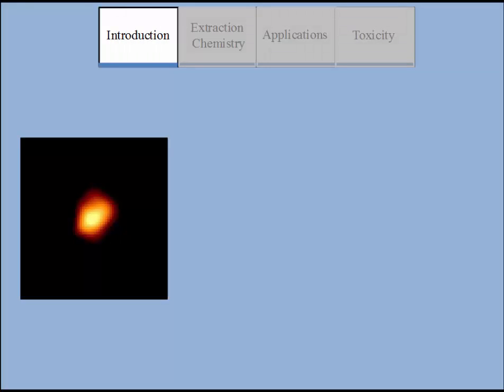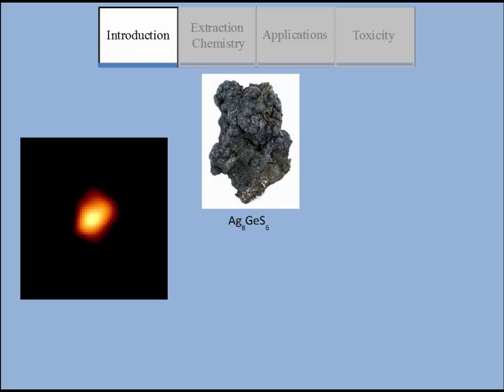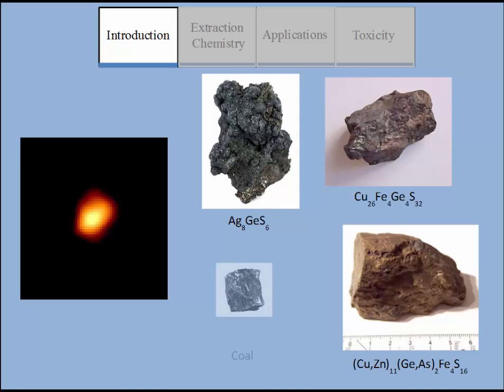Made in pulsating giant red stars, germanium is found in trace amounts in the earth's crust. Only a few compounds contain enough to be useful in extraction such as argonite, germanite, and retinite and some coal minerals.